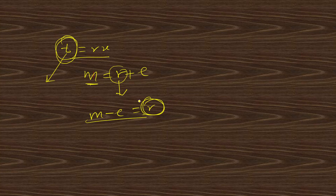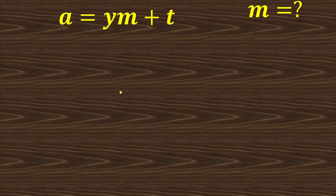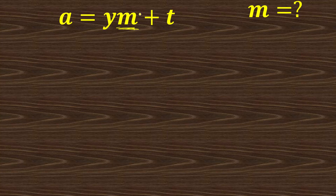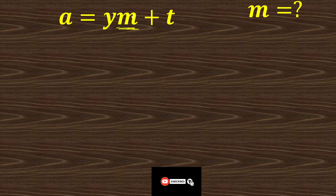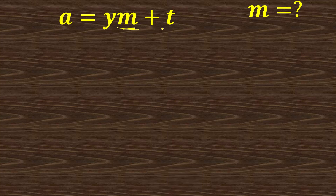Example one: we have a equals ym plus t, and we have to make m the subject. We look at where m is, and we need m to stand alone. So we send the plus t to the other side — subtracting t from both sides — to get a minus t equals ym.